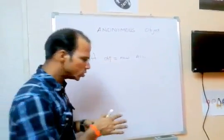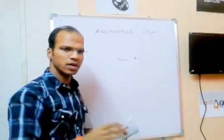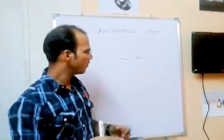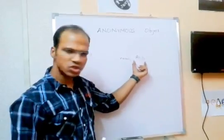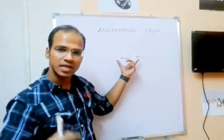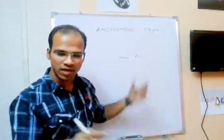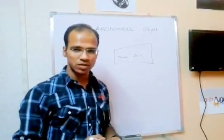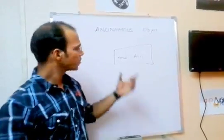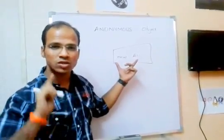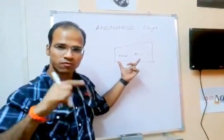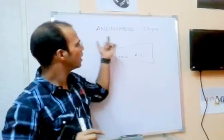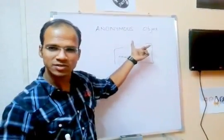So if I remove the reference part and simply write 'new A()', this creates an object which doesn't have any name — and that is called an anonymous object. The only problem is, if you are using this type of object, you cannot use it a second time. It is for one-time use only. That's anonymous objects in short.